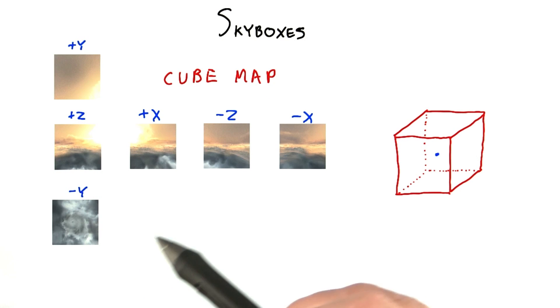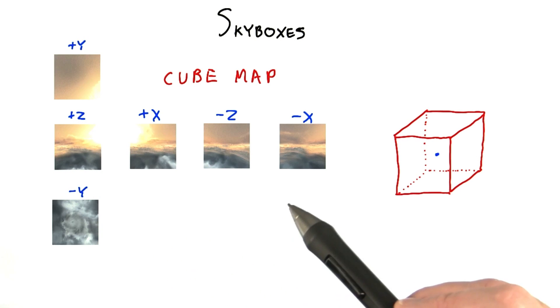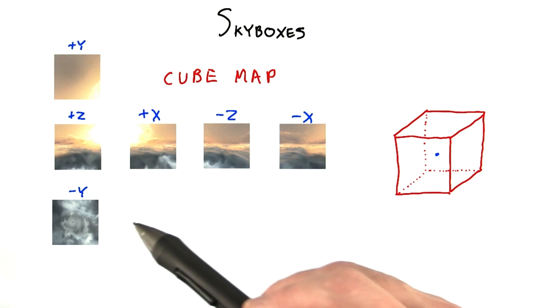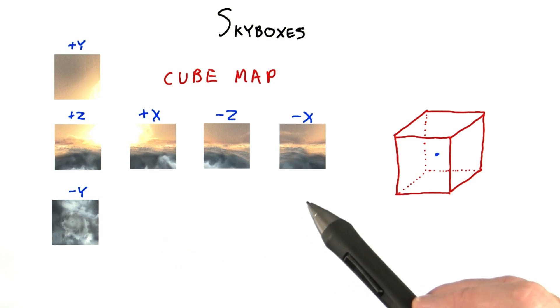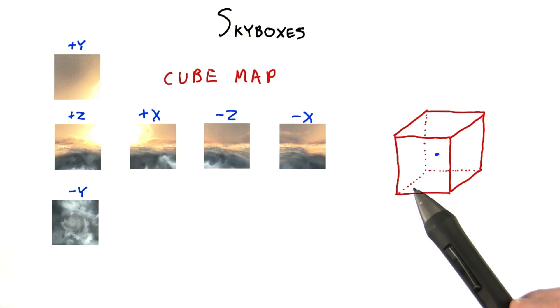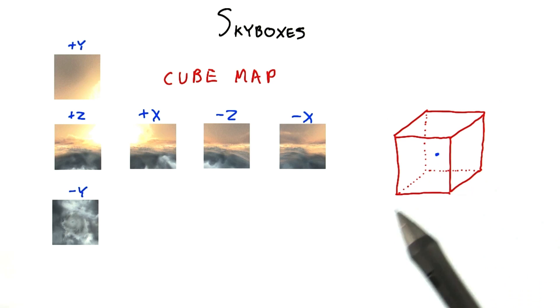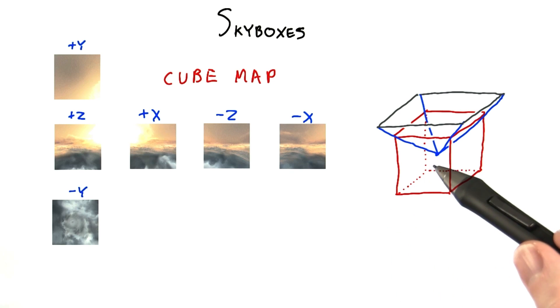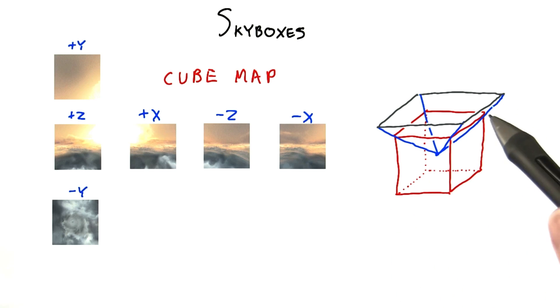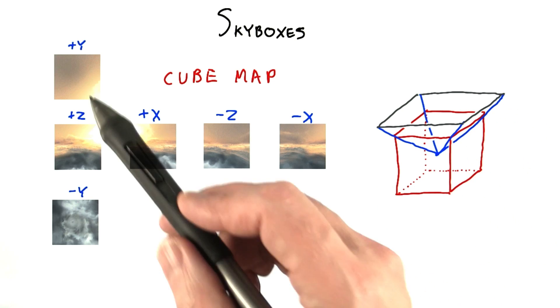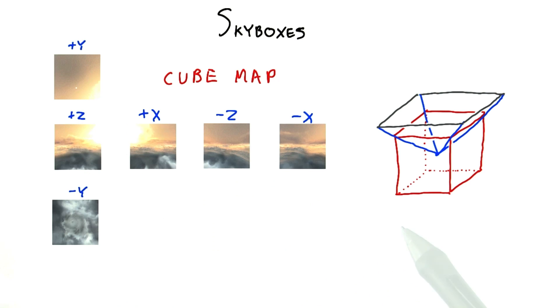This type of texture is called a cube map. It's made of six images that form the cube faces. The viewer is always placed at the center of the cube. For example, here's the frustum for the top of the cube, the plus y face.